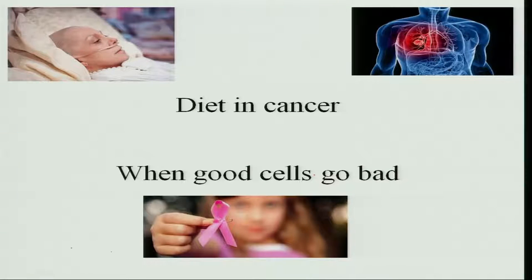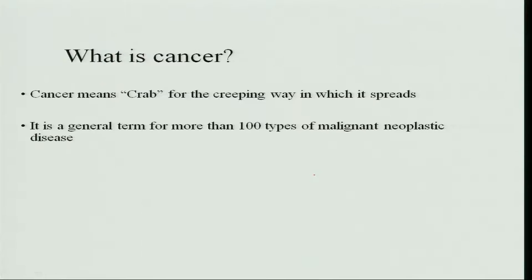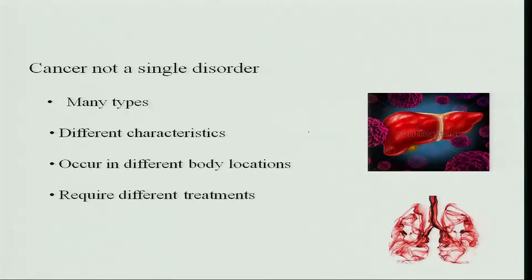What is the type of diet that has to be taken care of in the cancer state? When good cells go bad, it leads to cancer. Cancer means crab — it is the creeping way in which it spreads into the body. It is a general term for more than 100 types of malignant tumors which are neoplastic, meaning more and more cells increase in number. It is not a single disorder; there are many types of cancer with different characteristics, occurring in different body locations, and each type requires a different type of treatment.